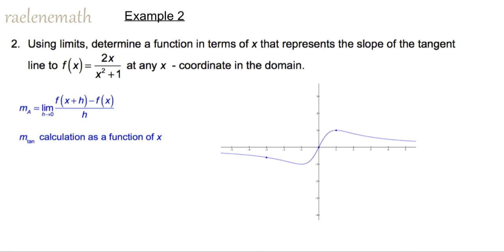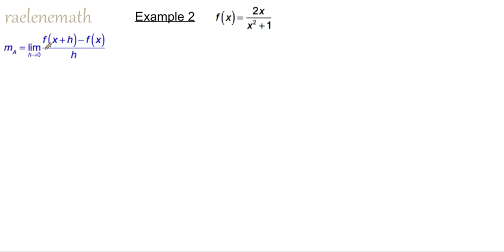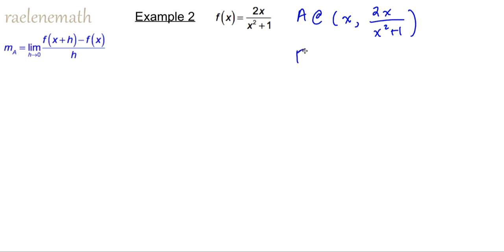The second example is different because now we're going to find the tangent slope as a formula, or a function of x, instead of a numerical value. Here's the graph of the function y equals 2x over x squared plus 1, and we are going to confirm our solution by plugging in three different x values once we get the formula. We're going to use this version of the big concept of the secant slope turning into the tangent slope. Point A is the point of tangency located when the x-coordinate is simply called x, the y-coordinate is f of x, or 2x over x squared plus 1. The second point has x-coordinate of x plus h, and the y-coordinate is called f of x plus h.